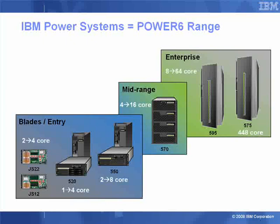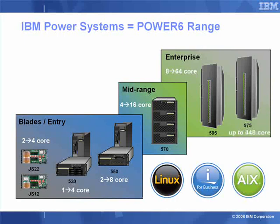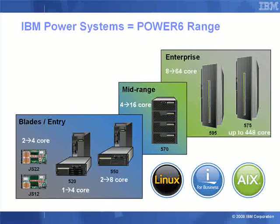If we look at how many cores or CPUs these can hold: in blades it's between 2 and 4; in the entry machines it's up to 4 and up to 8; for the mid-range we have 4 to 16. The 575 is used for high performance computing — we can have 14 of these in a single 24 inch rack, giving us up to 448 cores in a single rack. All of these machines will run the operating systems AIX, IBM i and Linux for Power. We can dedicate the whole machine to a particular operating system or have any mix and match of these operating systems on the same machine.